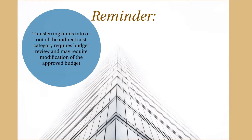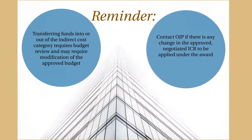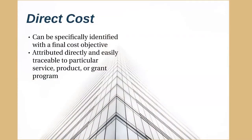Indirect costs may require modification of the approved budget. Recipients must promptly contact OJP if there is any change in the approved negotiated ICR to be applied under the award. A direct cost is a cost that can be specifically identified with a final cost objective. In other words, these costs can be attributed directly and are easily traceable to a particular service, product, or grant program. By contrast, indirect costs are difficult to trace to a specific cost objective and are usually attributed broadly through allocations or cost rates.